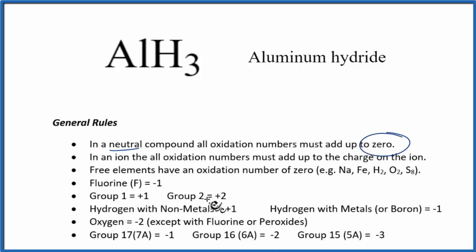We don't see aluminum here on our list, but we do see that hydrogen, when it's bonded to non-metals, that's plus one. Aluminum, that's a metal. When hydrogen is bonded to metals, it has a minus one oxidation number. So each one of these three hydrogens here, oxidation number is minus one.